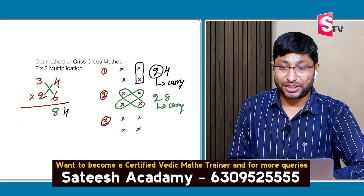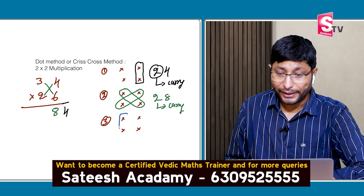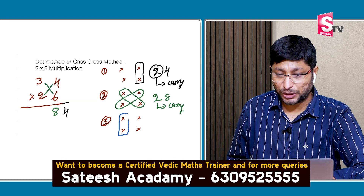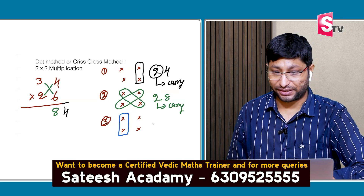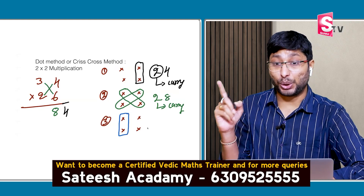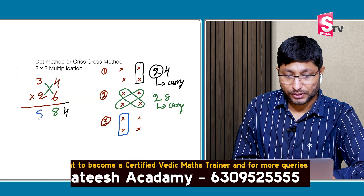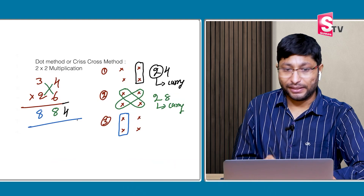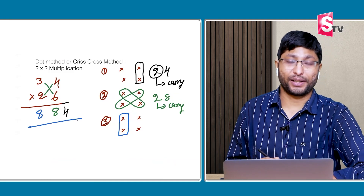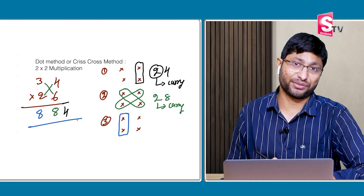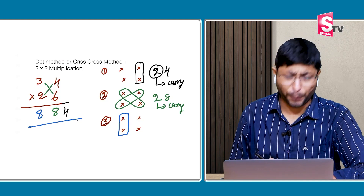Step 3: tens place into tens place. 3 × 2 = 6. Plus 2 carry = 8. So the answer is 884. Hope you understood.